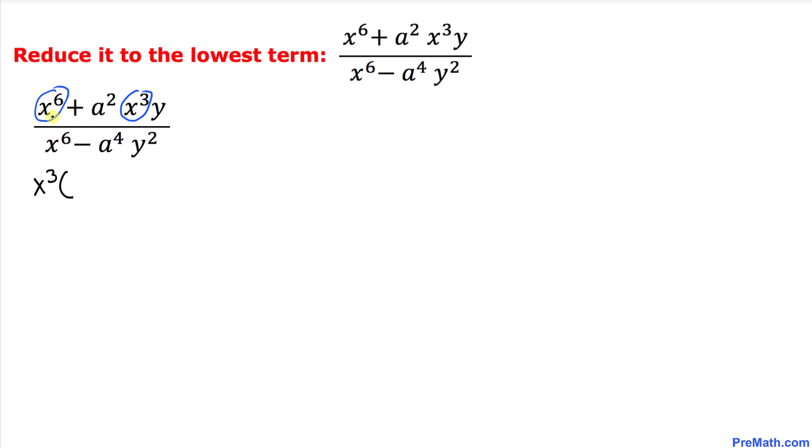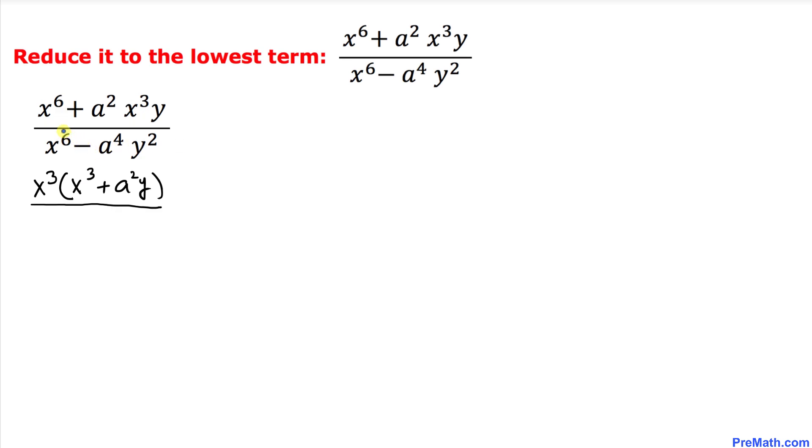If we factor out x^3, we end up with x^3 plus a^2 y on the top. Now let's focus on the denominator part.